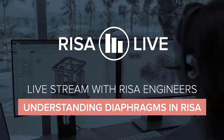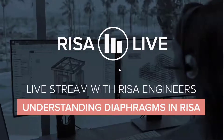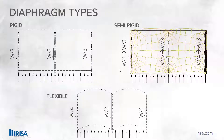Today, we're going to be focusing on understanding diaphragms and the different types of diaphragms in our RISA software. So let's go ahead and jump right into it. I'm going to start off with just a short little PowerPoint here today. We have a few different types of diaphragms in our software: the first type is a rigid diaphragm, the second a semi-rigid diaphragm, and then the third a flexible diaphragm.